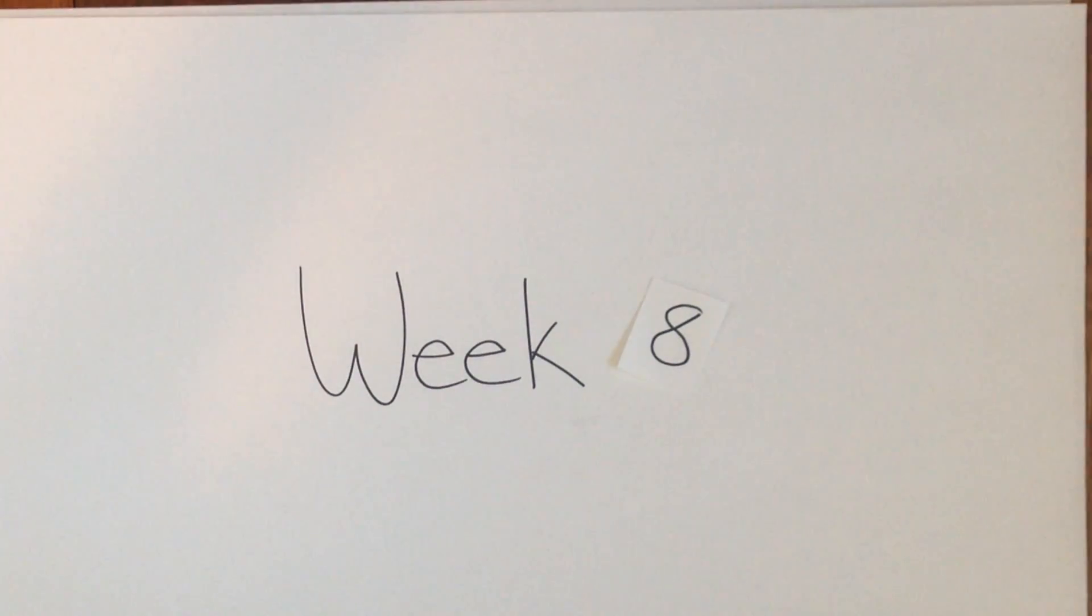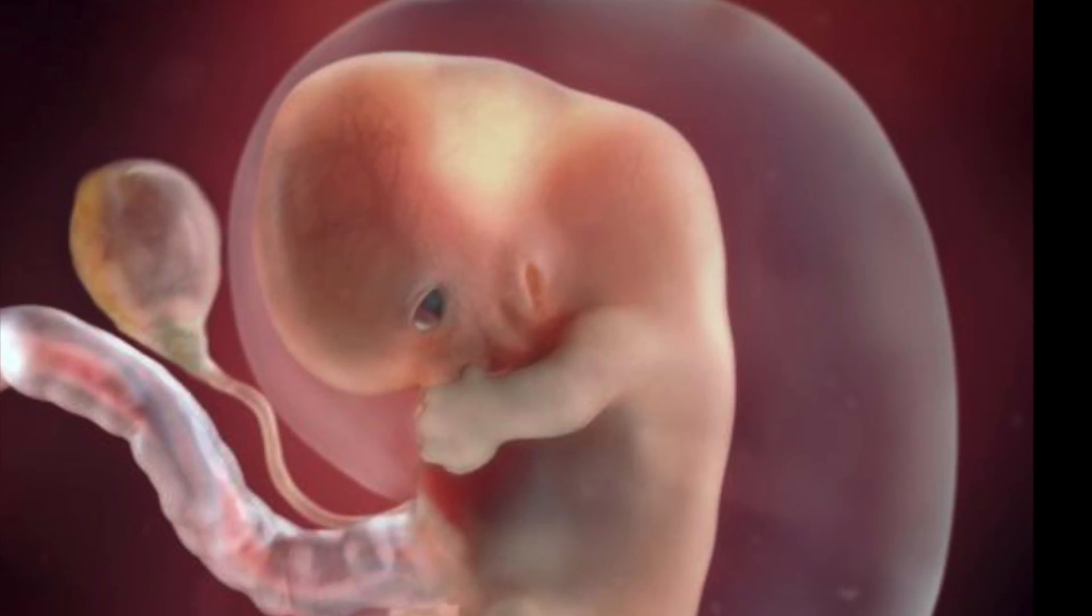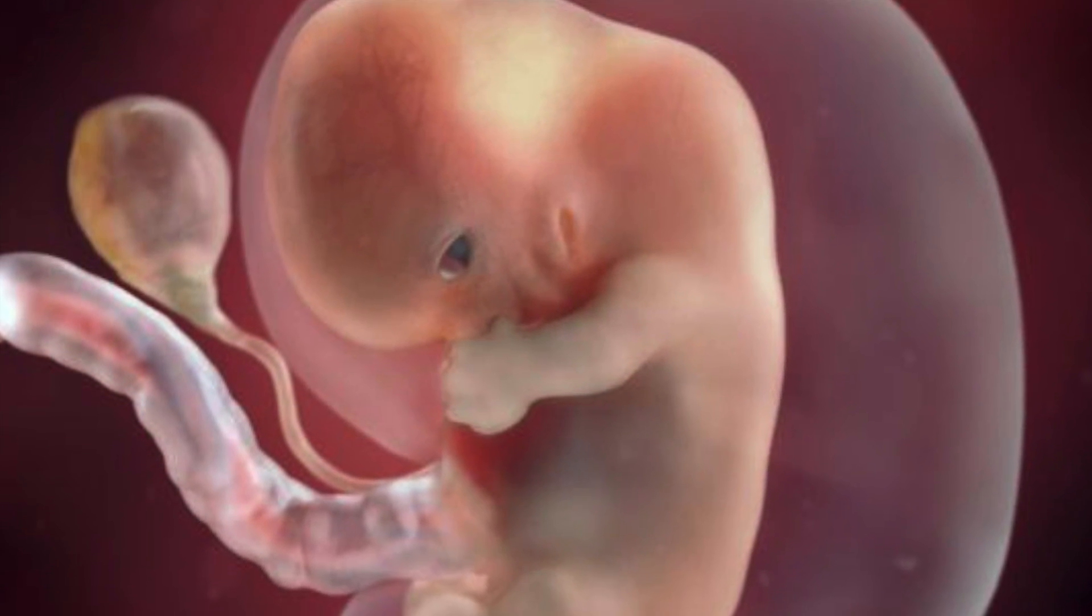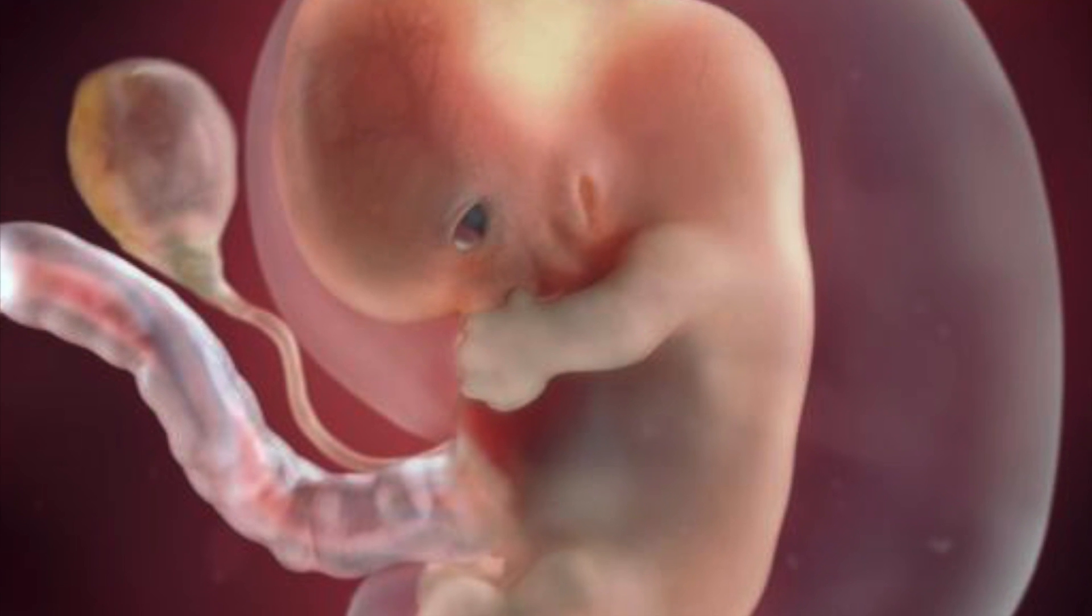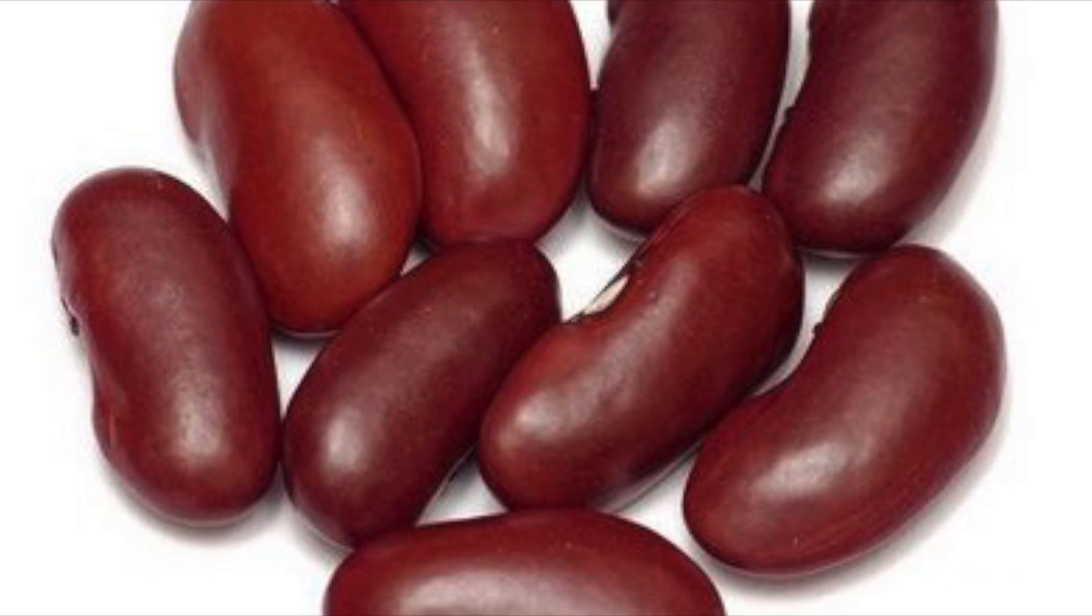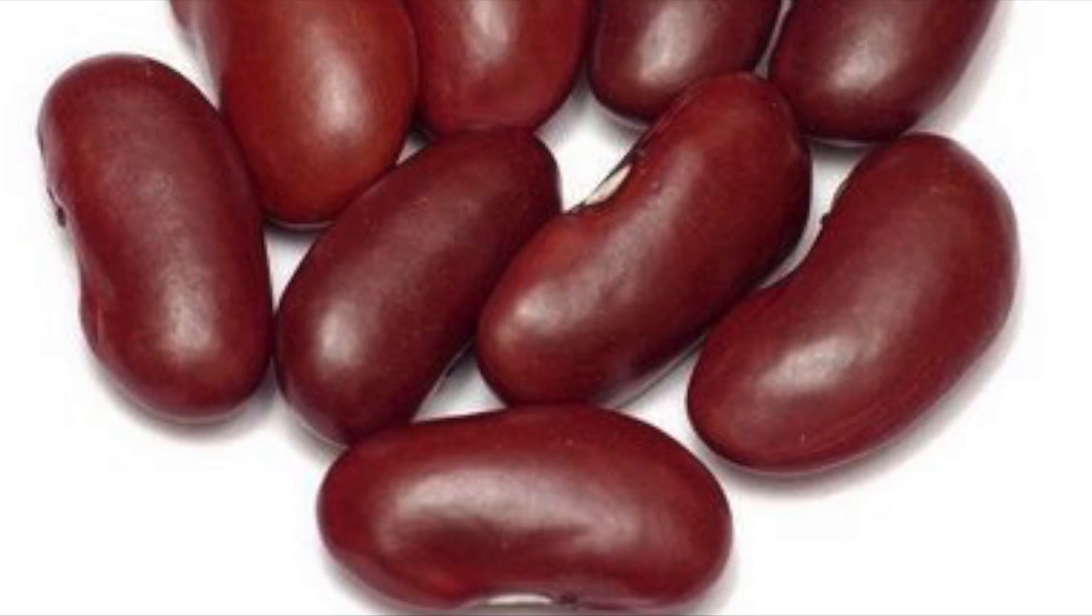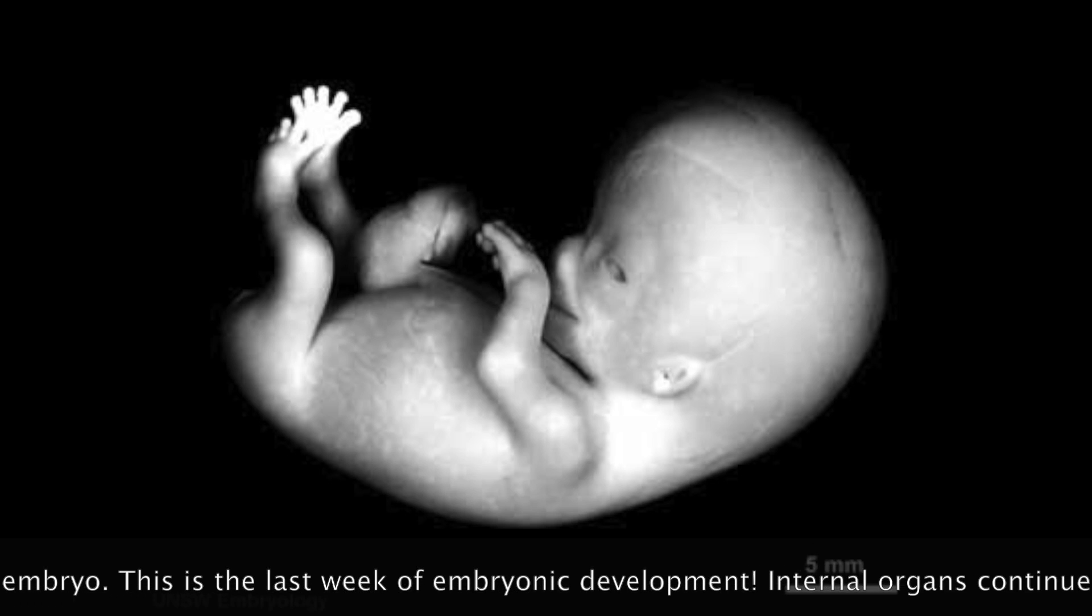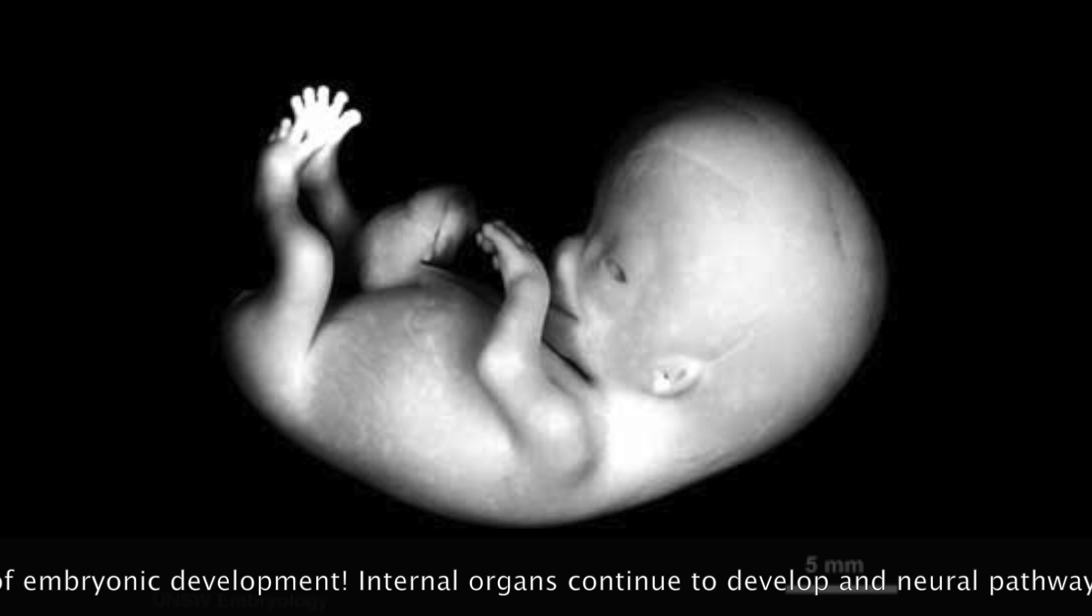The embryonic tail is just about gone by week eight. The upper limbs have become longer and bent at the elbow and digits become distinct and no longer webbed, giving the embryo more human-like characteristics, although it is still only about the size of a kidney bean. Internal organs such as the liver and lungs continue to develop and nerve cells are branching out to connect with each other, forming primitive neural pathways.